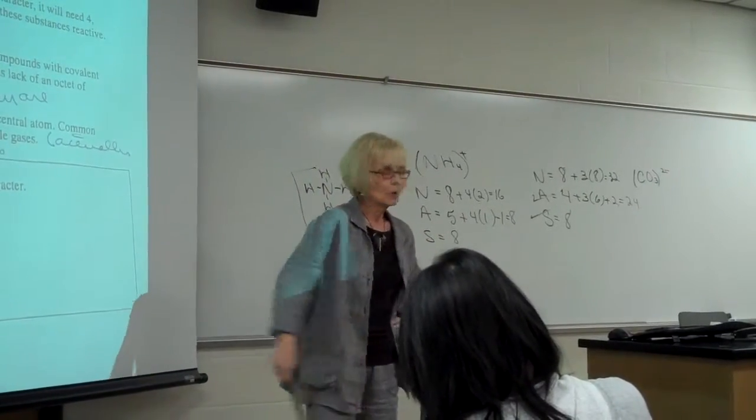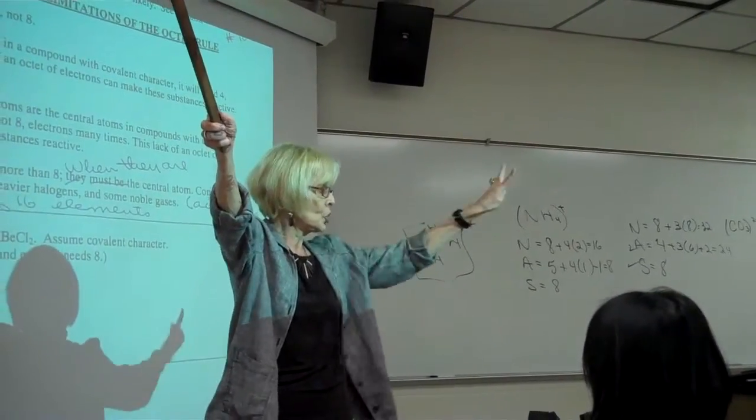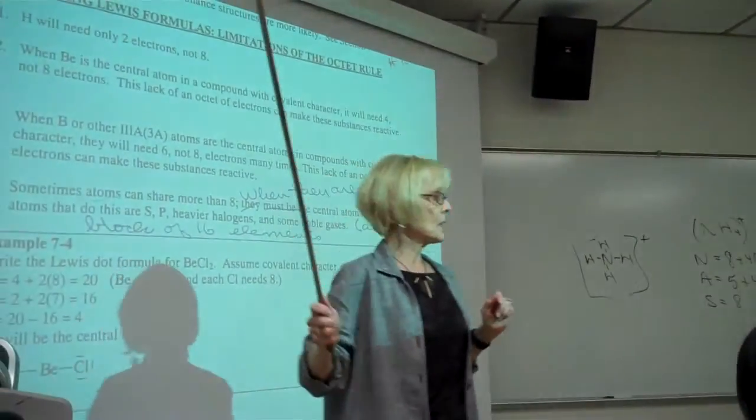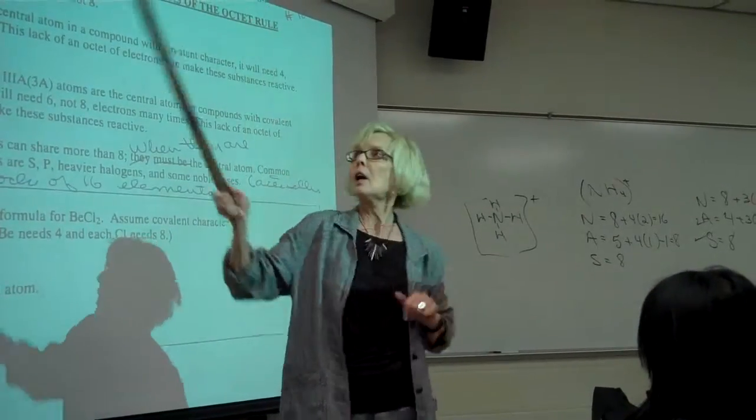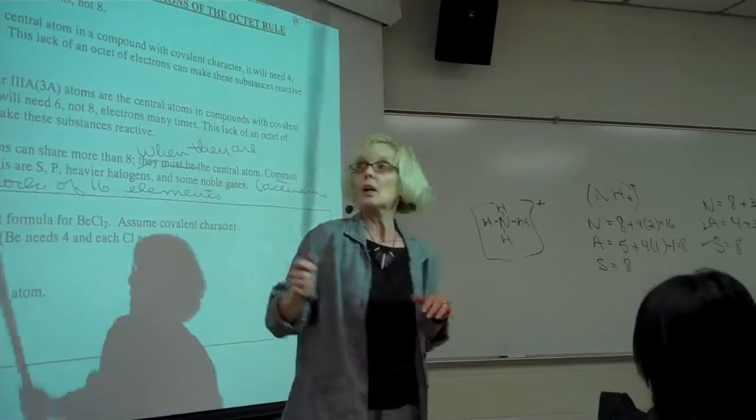Does anybody see a pattern? Hydrogen was in the 1A and it needed how many? Two. Beryllium is in the 2A and it needed how many? Four. Boron is in the 3A and it needs six.